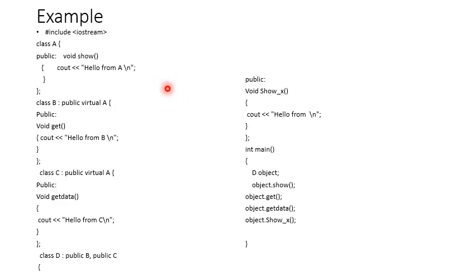One example: class A has a method named show that prints 'Hello A'. Class B publicly virtually inherits A. Class C also publicly virtually inherits A and prints 'Hello C'. Class D publicly inherits B and C.